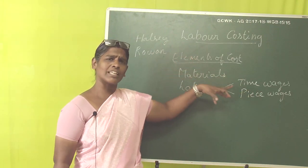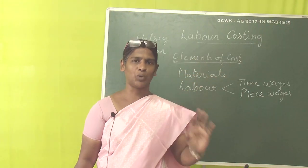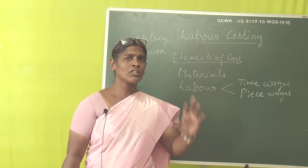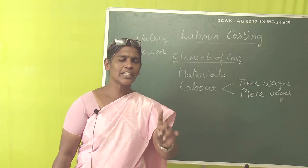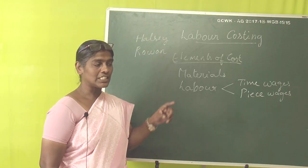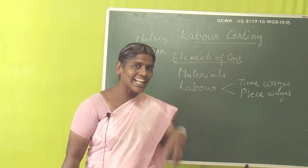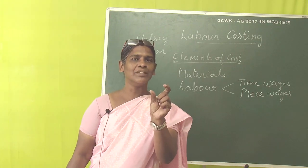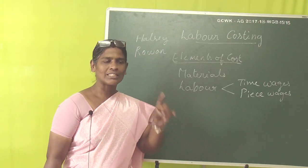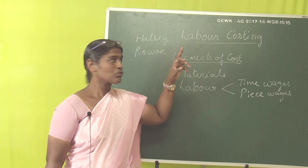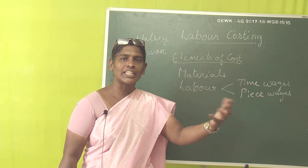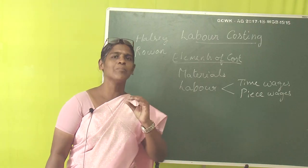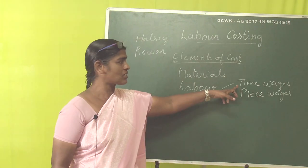If a worker completes the work within the standard time — say in 25 or 20 minutes instead of 30 — then for the time saved, he receives a bonus. This way, even in time wages, we can encourage workers by giving a bonus. Similarly, Rowan has stated a different method for fixing the bonus to be paid to the worker. So time wages can be differentiated in this way.